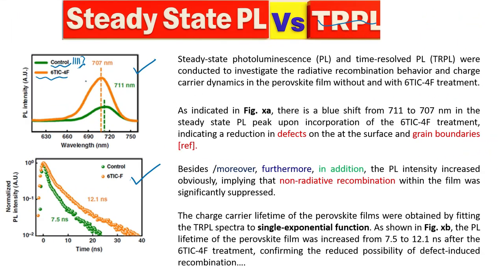In this graph, there is a clear signal that when we add this additional amount to the film, the PL peak intensity increases. This is one indication. When the intensity increases, this means that the crystallinity increases.